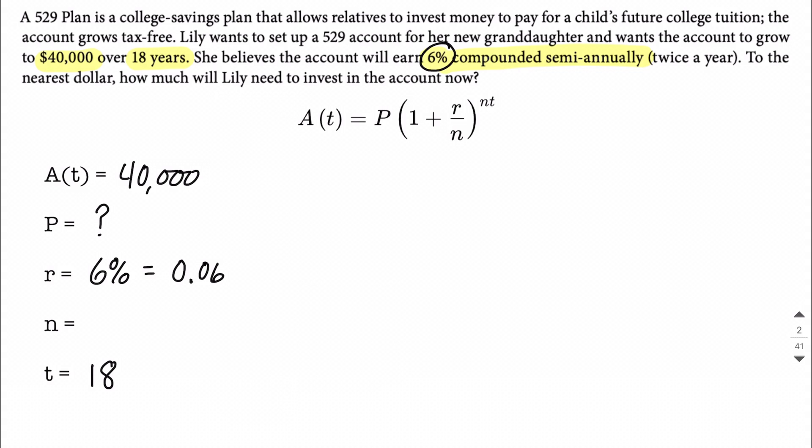Finally, n is the number of compoundings in a single year. So not the total number of compoundings in 18 years, but in a single year. This is compounded semi-annually, so that's twice a year. So our n value is going to be 2. Alright, filling everything in, let's take a look at what this looks like.